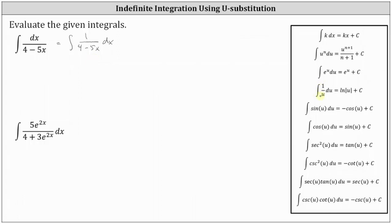The integral of 1 divided by u du equals the natural log of the absolute value of u plus C. In this case, we will let u equal the denominator, 4 minus 5x, which means du is equal to the derivative of 4 minus 5x times dx, which gives us negative 5 dx. Notice the integral does not contain a negative 5 dx — it has 1 dx — and therefore we'll solve for dx by dividing both sides by negative 5. Simplifying, we have negative 1/5 du equals dx.